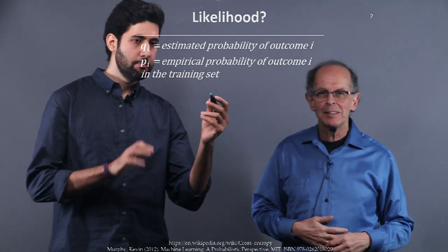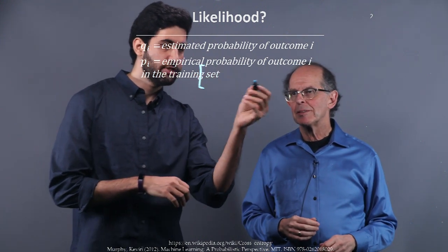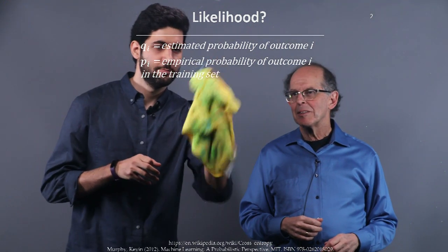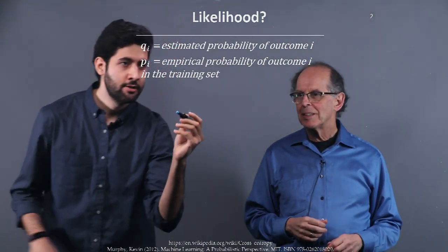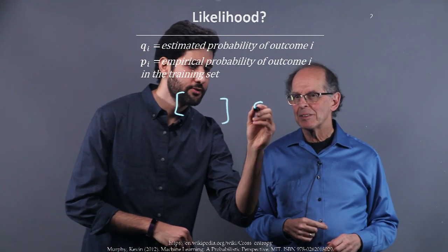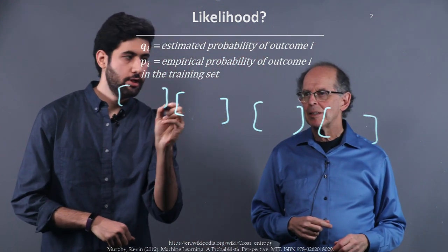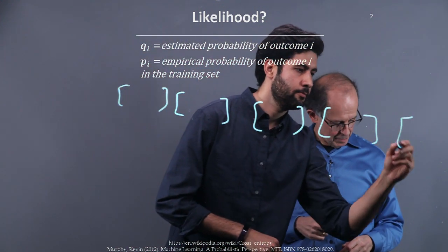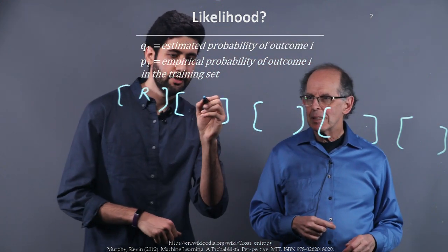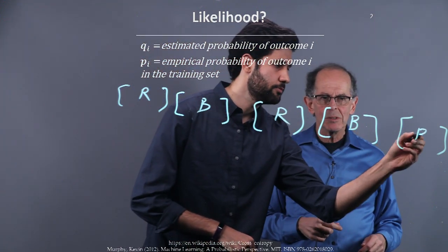Okay, so basically this is our training set. We just pick some candies. For example, we have five samples from this distribution: one, two, three, four, and five. Two reds. First one is red, second one is blue, red, blue, and blue.